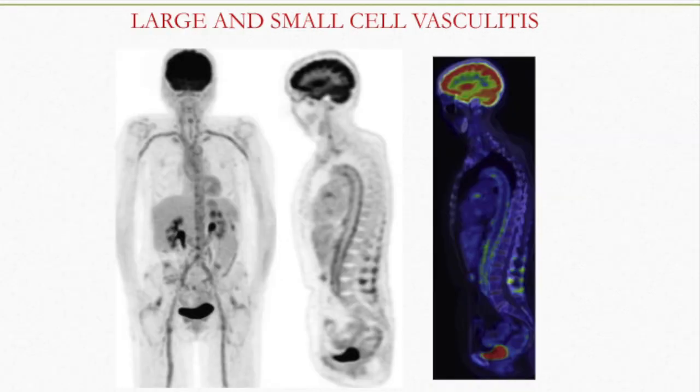As I have already shown large vasculitis, medium as well as small vessel vasculitis is also an important indication for evaluation by PET-CT. You can see diffuse uptake in the iliac vessels, the proximal arteries of both thighs, and the proximal aspects of the subclavian vessels.